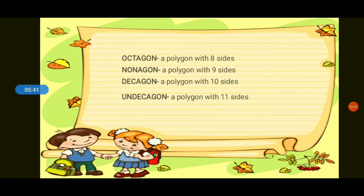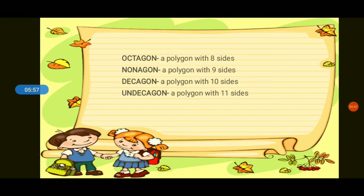Next, we have andecagon. Andecagon is a polygon with eleven sides. What is a polygon with eleven sides? That is what we call andecagon. Again, what is a polygon with eleven sides? Andecagon. Those are the different polygons.